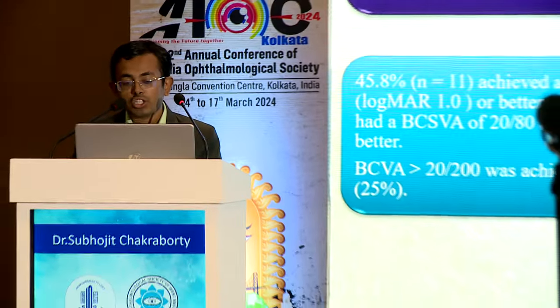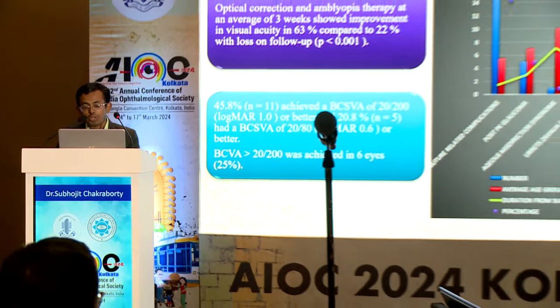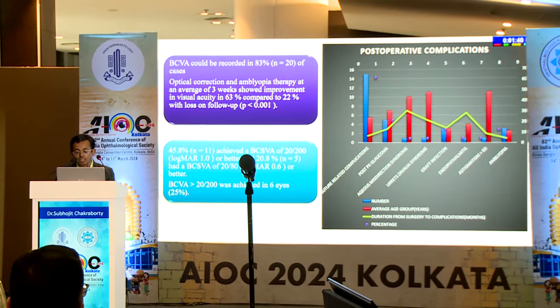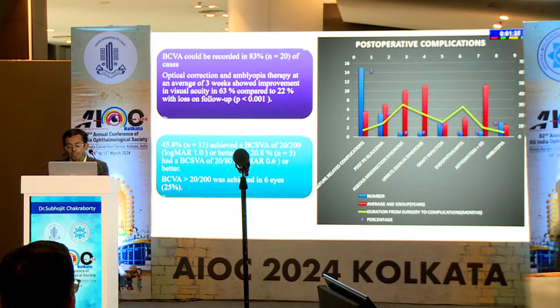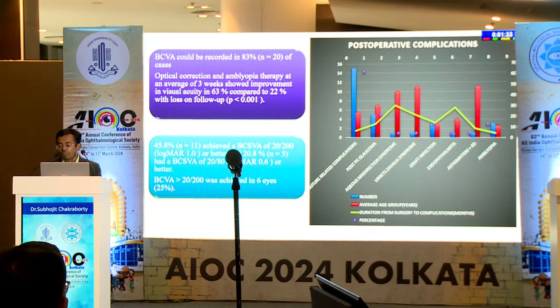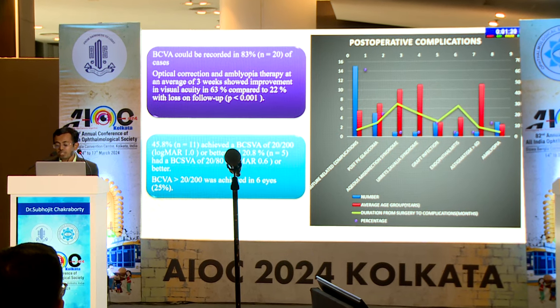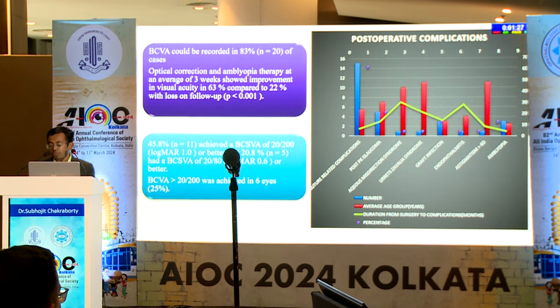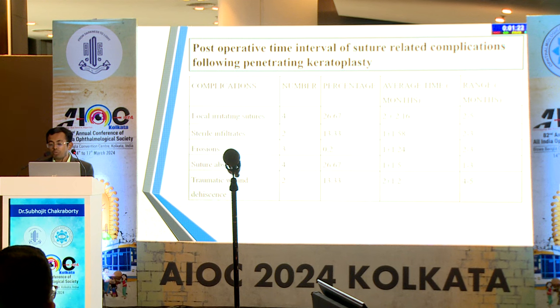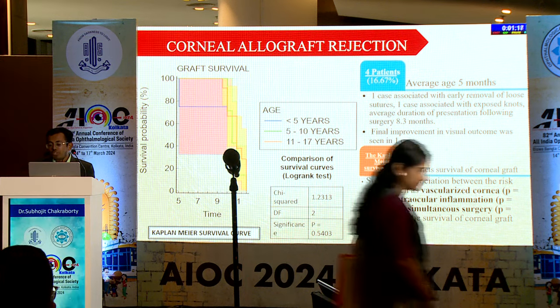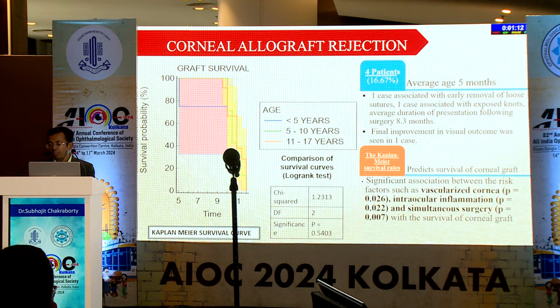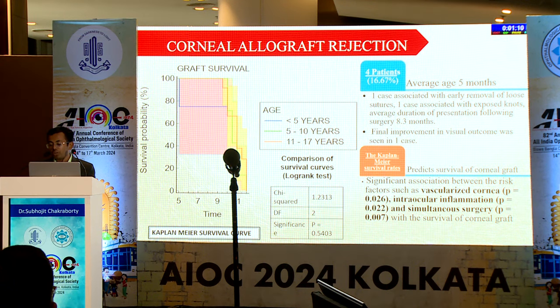Visual acuity could be recorded in 83% of cases, and optical correction and amblyopia therapy at an average of 3 weeks showed improvement in visual acuity in 63% of cases. However, vision better than 20/200 was achieved in only 25% or 6 eyes. Corneal allograft rejection was observed in 4 patients at an average of 5 months. Final improvement in visual outcome in these young patients was seen in only one case.